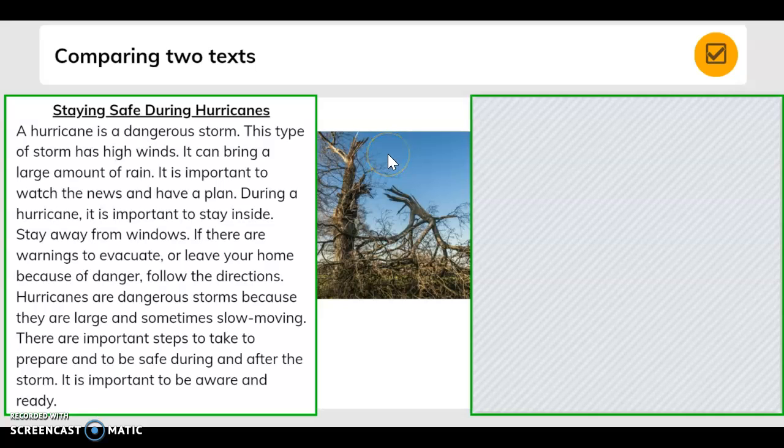Here's our second one where we're comparing two other texts. The first one is staying safe during hurricanes. A hurricane is a dangerous storm. This type of storm has high winds. It can bring a large amount of rain.